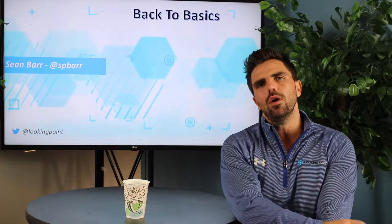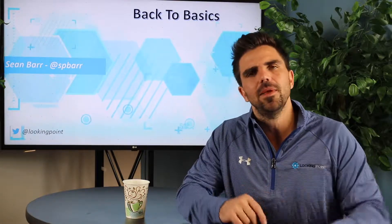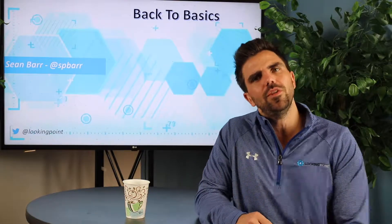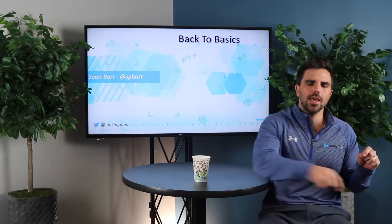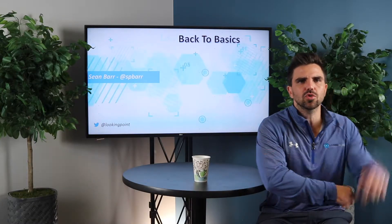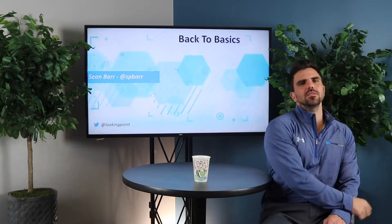So that's it on port security. We've covered MAC security, 802.1X, and DHCP snooping with dynamic ARP inspection. If you want to know more about those technologies, just leave a comment and let us know — we'll do a video for you. And if you liked it, make sure you like and subscribe. We'll see you on the next Back to the Basics. Peace out.